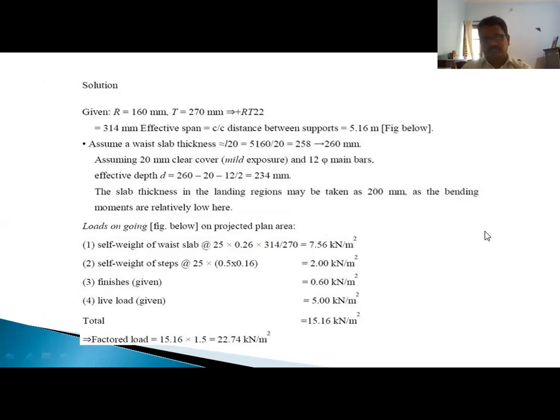This is the solution. First the given data: rise is 160 mm, tread is 270 mm. We have to add 22 mm extra for the rise and treads for nosing distance. So 270 mm plus 22 plus 22 equals 340 mm. Now the effective span center to center distance between the supports is 5.16 meters. Assume the waist slab thickness is L/20, that is 5160/20 equals 258, rounded to 260 mm. Assuming 20 mm clear cover because of mild exposure and 12 mm diameter bars. Therefore effective depth d is 260 mm minus 20 mm cover minus dia/2, equals 234 mm. The slab thickness in the landing portion we will take as 200 mm because the bending moment is relatively very low compared to flights.